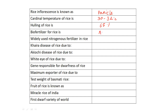The bio-fertilizer for rice is Azolla. Azolla is the bio-fertilizer for rice. The most widely used nitrogenous fertilizer in rice is ammonium sulfate — ammonium sulfate is the most widely used nitrogenous fertilizer.